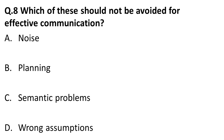The next question: which of these should not be avoided for effective communication? Noise should be avoided, semantic problems should be avoided, and wrong assumptions should be avoided. But planning should not be avoided — there should be proper planning before any lecture or communication. So for effective communication, planning should not be avoided. The correct answer is planning.